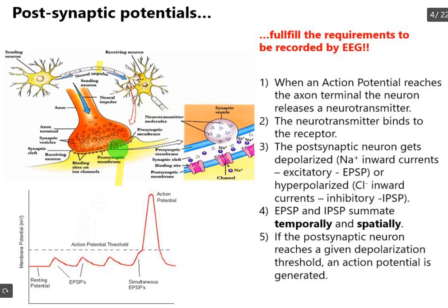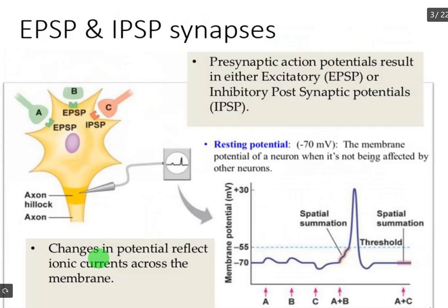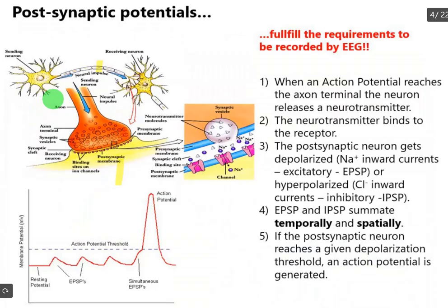EPSP and IPSP sum temporally and spatially. Temporally relates to firing of different sending neurons at the same exact time — if we have EPSP and IPSP synapses happening at the same time, they will sum temporally. Spatially means we have many sending neurons that sum spatially. If we assume a baseline resting potential, when two EPSPs come in and sum, and then thousands of neurons fire causing excitatory post-synaptic potentials, the membrane reaches a threshold and an action potential is created.